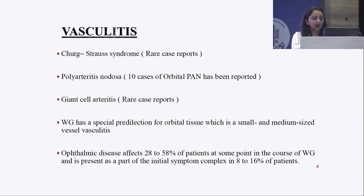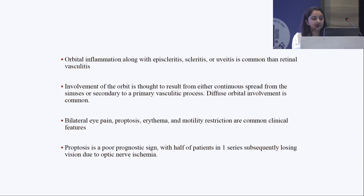Orbital inflammation may also be caused by vasculitis, including Churg-Strauss disease, polyarteritis nodosa, GCA, and Wegener's granulomatosis, which has a special predilection for orbital tissue. Ophthalmic disease affects about 20–50% of patients at some point in the course of Wegener's granulomatosis and may be the initial presentation in 8–16% of cases.